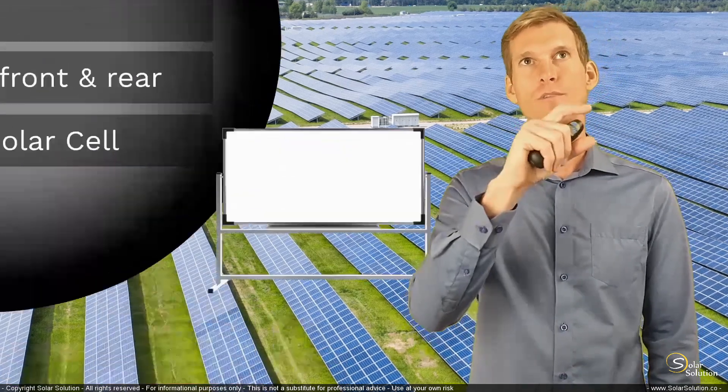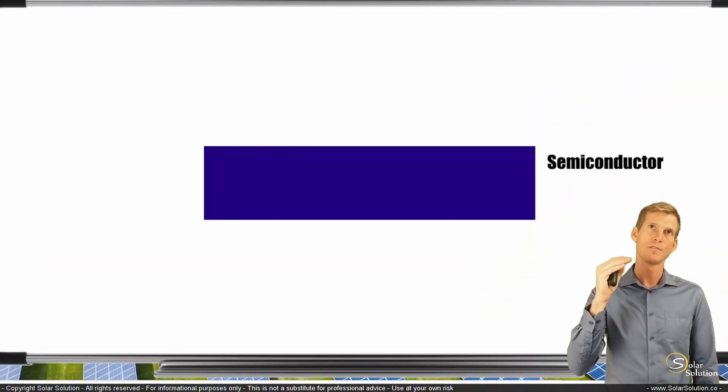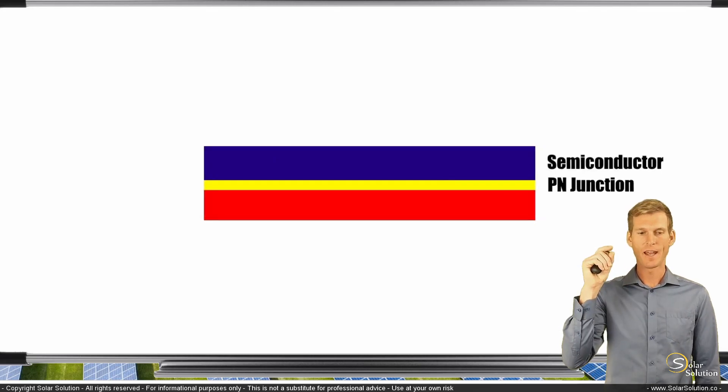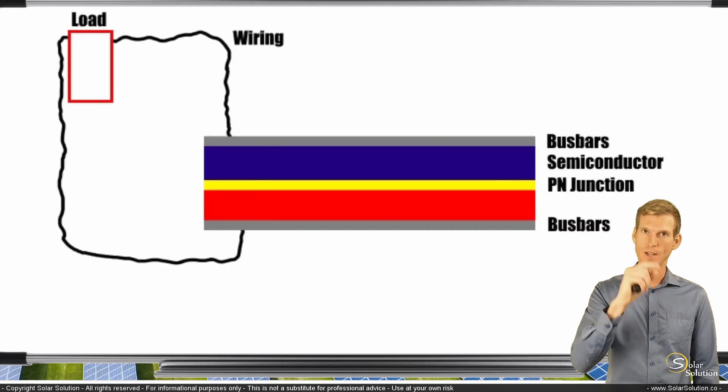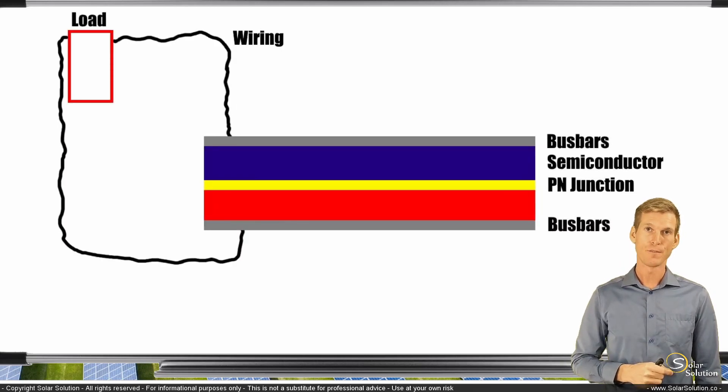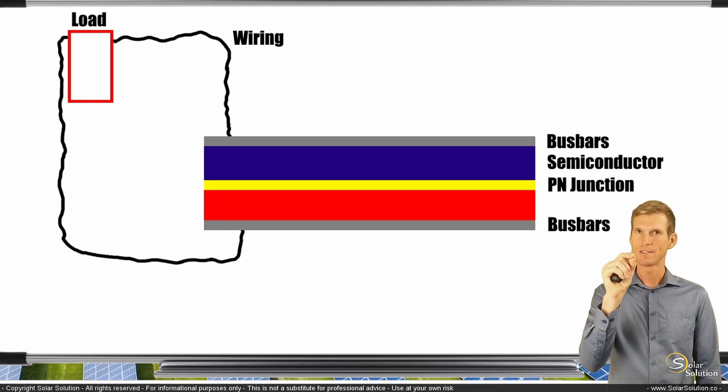So we start again with a semiconductor. We have a positive side, a negative side, a PN junction, and we place the busbars on the top and the bottom. We wire it up in a circuit and we have created electricity through a photovoltaic cell. But now this is only a cell, only a photovoltaic cell.